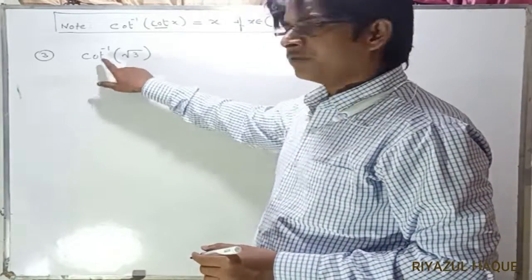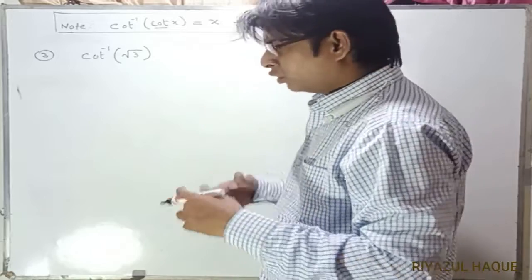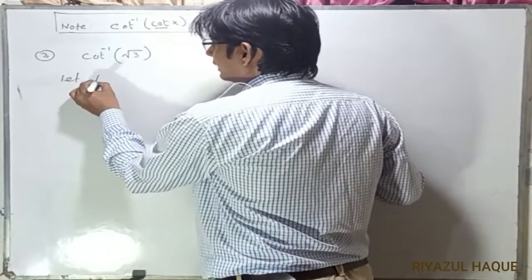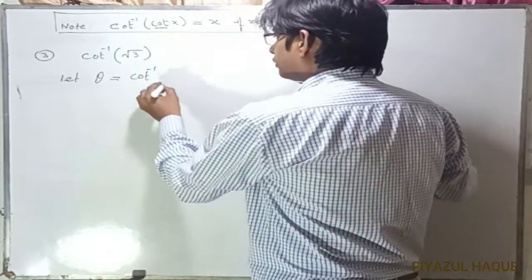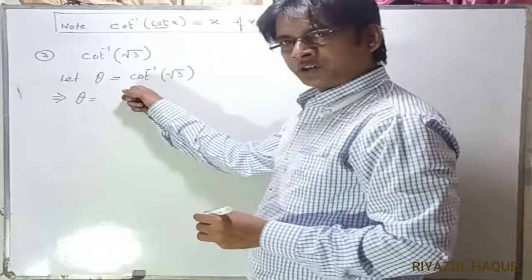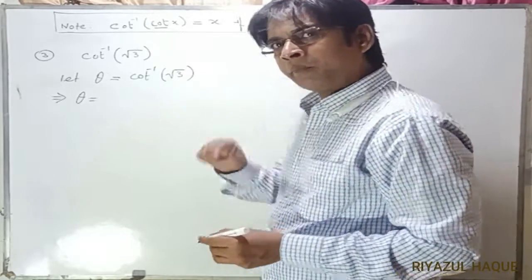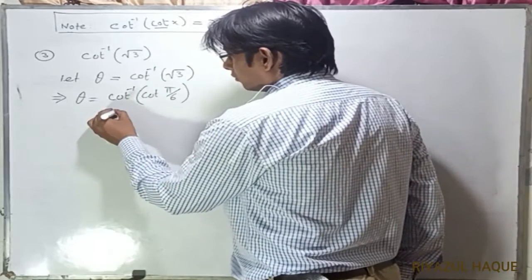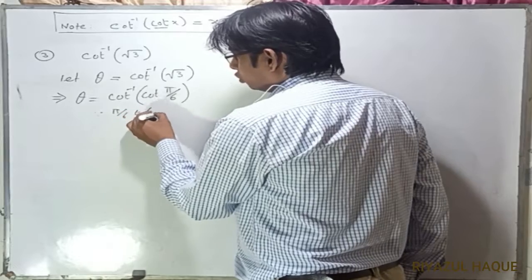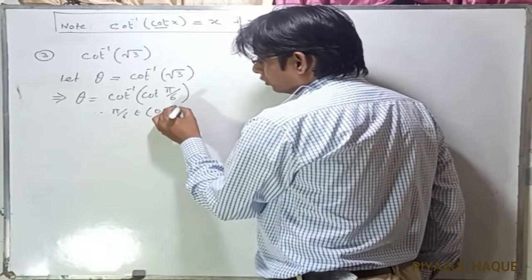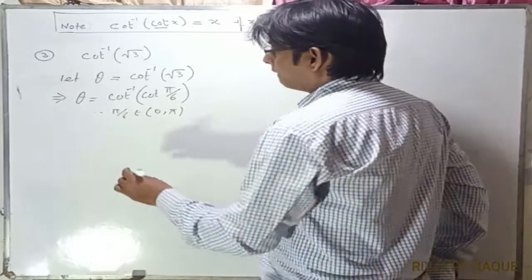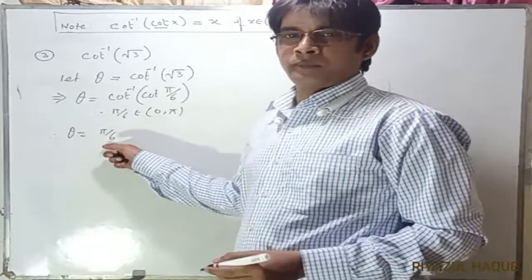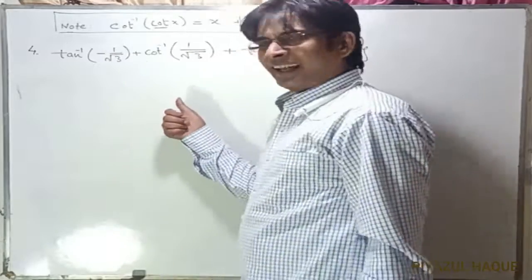Example 3: cot⁻¹(√3). We solve this the same way as the previous two examples. Let θ = cot⁻¹(√3). We convert the cot inverse function to the cot function: cot(π/6) = √3. Since π/6 belongs to the domain of the cot function, which is (0, π), therefore θ = π/6 is the principal value of cot⁻¹(√3).